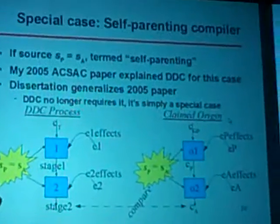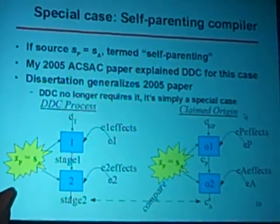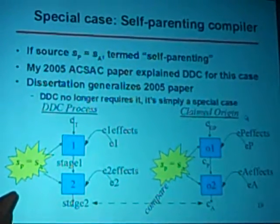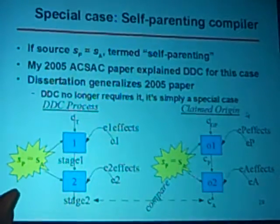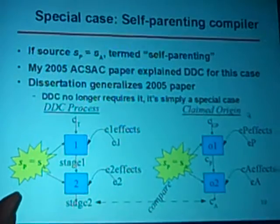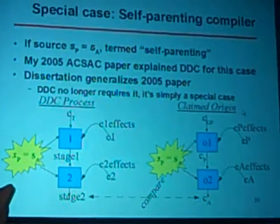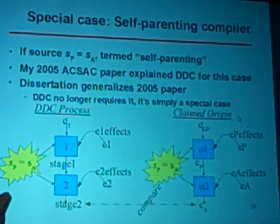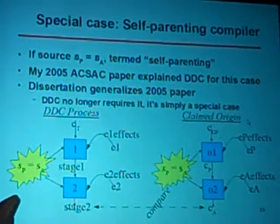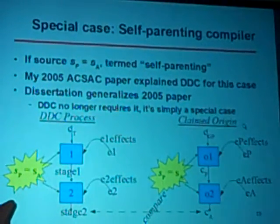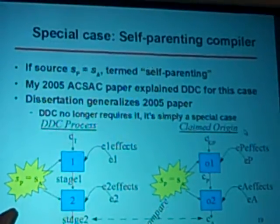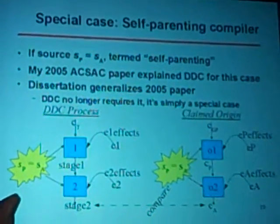There's a special case: what happens when the parent compiler is the same as the compiler under test — a self-parenting compiler. I actually published about this approach in 2005 in ACSAC. In that paper I presumed only this particular case. The dissertation is more general — I no longer require self-parenting — so the dissertation includes what the 2005 paper described as a special case.